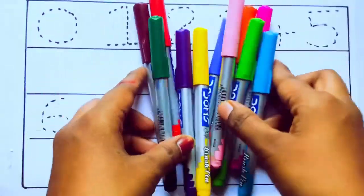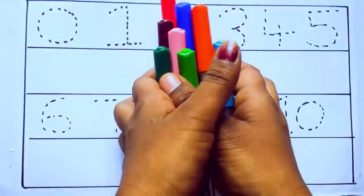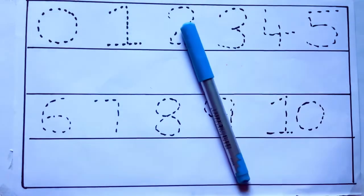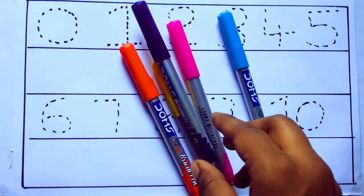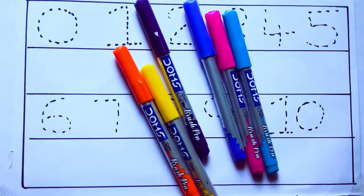Let's learn some colors. These are all the color pencils. Let's learn the names: sky blue color, pink color, yellow color, orange color, violet color, blue color.